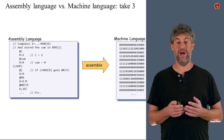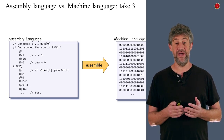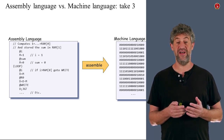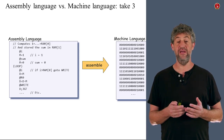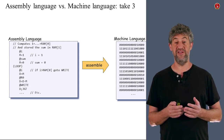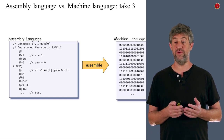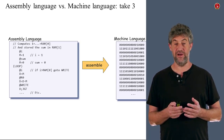How do you go from left to right? How do you do the assembly operation — what is the assembler, which is the program that translates assembly language code on the left to machine language code on the right?